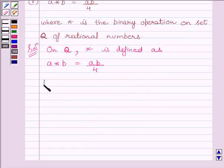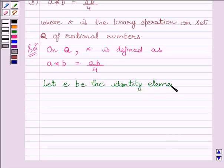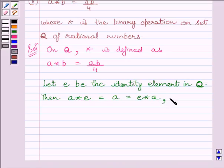Now, let E be the identity element in Q, where Q is the set of rational numbers. Then, from key idea, A star E is equal to A is equal to E star A for every A belonging to Q.